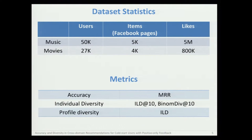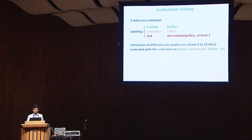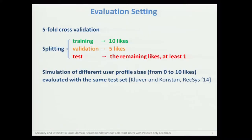For evaluating the accuracy, we used the mean reciprocal rank. For the individual diversity, we used inter-list diversity at 10 and binomial diversity at 10. And in order to compute the profile diversity degree, we used again the inter-list diversity. As evaluation setting, we used a particular strategy proposed by Claver and Constant in RecSys 2014.